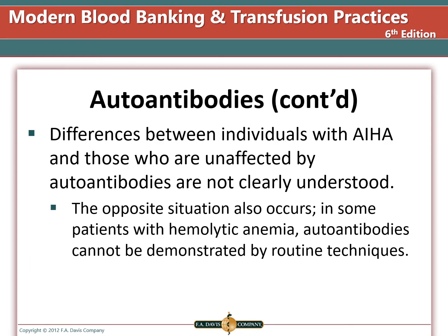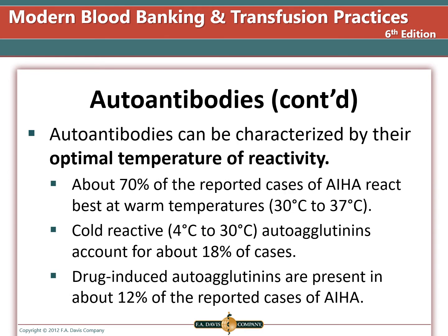Differences between individuals with autoimmune hemolytic anemia and those unaffected by autoantibodies are not clearly understood, and we can also have hemolytic anemias without autoantibodies. We characterize autoantibodies by their optimal temperature of reactivity: about 70% of reported cases react best at warm temperatures between 30 and 37 degrees Celsius, closest to body temperature. About 18% are caused by cold reactive antibodies reacting at 4 to 30 degrees Celsius, and about 12% are drug-induced autoagglutinins.